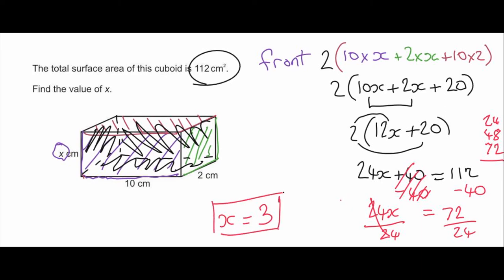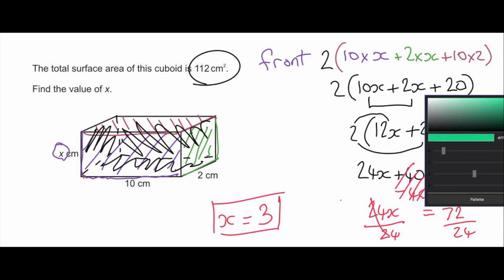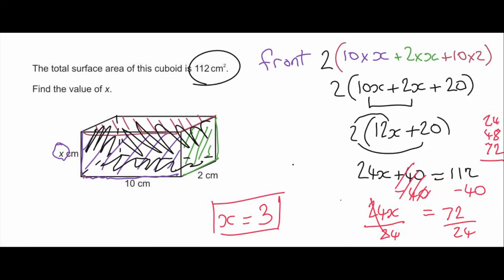Now if I wanted to check that just to make sure it was right. As my check I'm going to say we ended up knowing that 2 lots of 12x plus 20 was the expression for the surface area. So I'm just going to substitute in the value of 3 into that equation. So we've got 2 lots of 12 times 3 plus 20. 12 times 3 gives me 36.